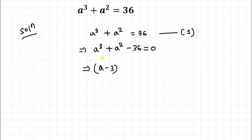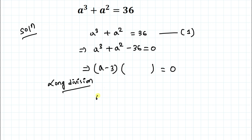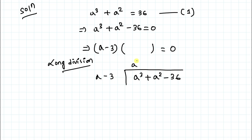Since (a − 3) is one factor and the equation is degree 3, there are two other solutions to find. We apply the long division method, dividing a³ + a² − 36 by (a − 3). We multiply 'a' by a² to get a³, and −3 by a² to get −3a², giving us a³ − 3a² in the first step.